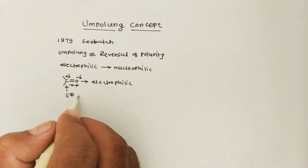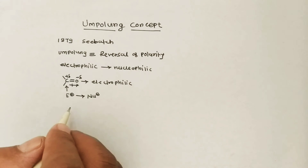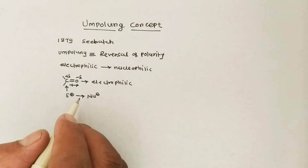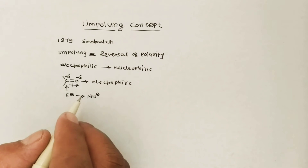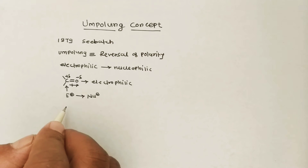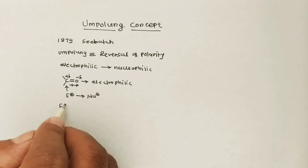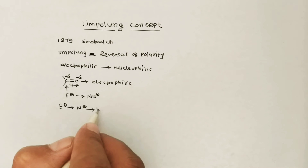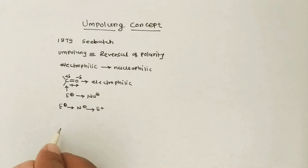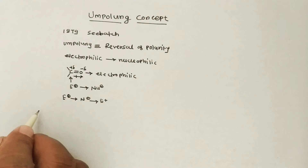In the case of the Umpolung concept, there is a reversal of polarity of the carbonyl carbon from electrophilic to nucleophilic character. The definition of Umpolung is: the reversal of polarity of a functional group, that is, electrophilic to nucleophilic and nucleophilic to electrophilic, is known as the Umpolung concept. The well-known example of this concept is benzoin condensation.